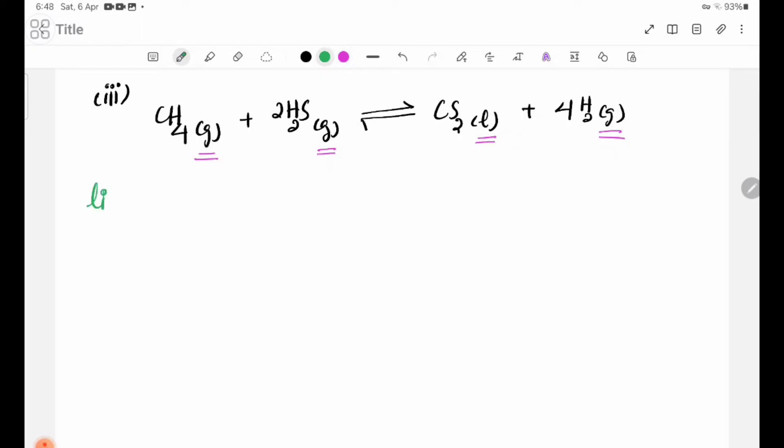In chemical equilibrium, liquids and solids don't appear in the equilibrium constant expression. So the KP expression is P(H2) to the power 4 divided by P(CH4) times P(H2S) to the power 2. For KB, since CS2 is liquid, we exclude it. KB includes only the gas concentrations.